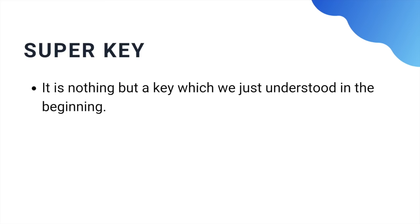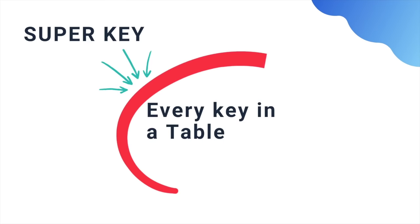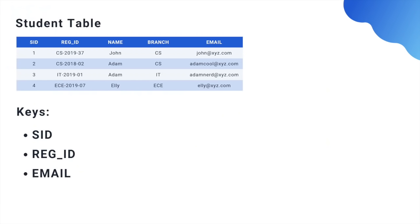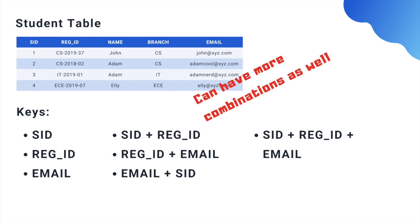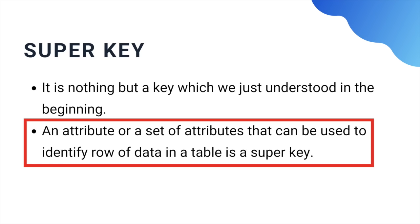Super key is nothing but a key — it is a super set of keys in which all possible keys are included. Like in our example: SID, Registration ID, Email, then combinations of them — SID & Registration ID, Registration ID & Email, Email & SID, and then all three together. All are super keys. In simpler words, an attribute or a set of attributes that can be used to identify records in a table is a super key.